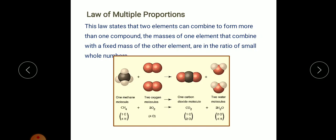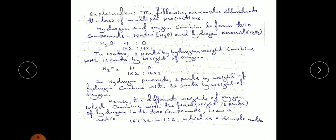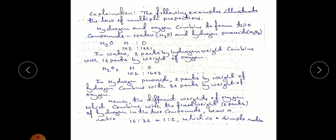To understand the law of multiple proportions, we'll take the example of hydrogen and oxygen. Hydrogen and oxygen combine to form two compounds: one is water (H₂O) and the other is hydrogen peroxide (H₂O₂). In H₂O, the ratio of hydrogen to oxygen is 1×2 (two hydrogen atoms) and 16×1 (one oxygen atom).